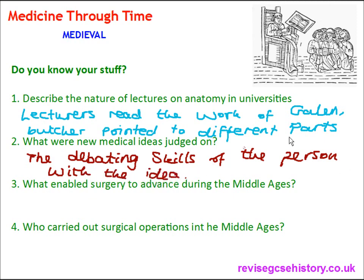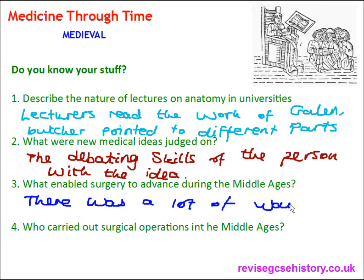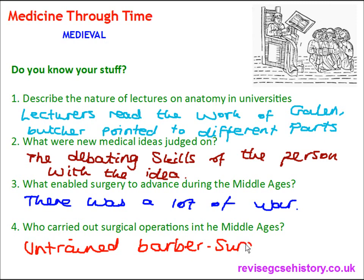Question three: What enabled surgery to advance during the Middle Ages? Answer: There was lots of war — it was a very violent period. Question four: Who carried out surgical operations in the Middle Ages? Answer: Untrained barber surgeons — the same people who would cut people's hair — because surgery was held in such low regard.